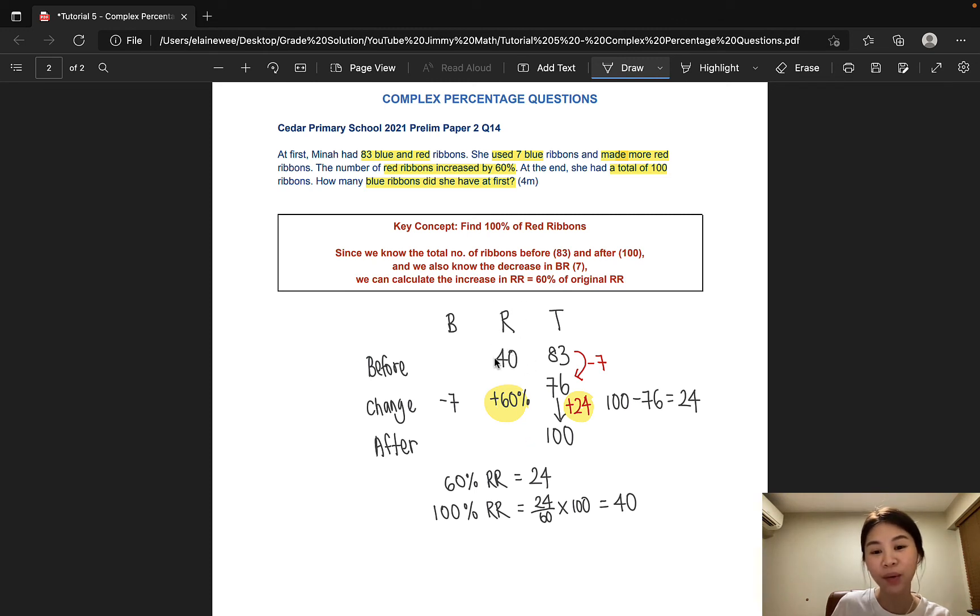So now that we know the number of red ribbons and the total number of ribbons at first, we can find the number of blue ribbons simply by subtracting 40 from 83. And that gives us 43. And that is the answer to this question.